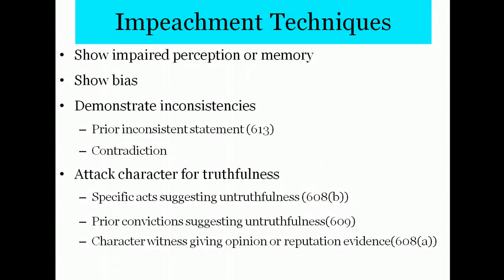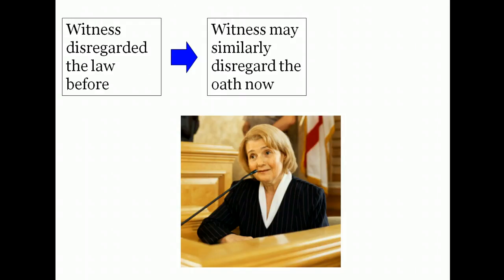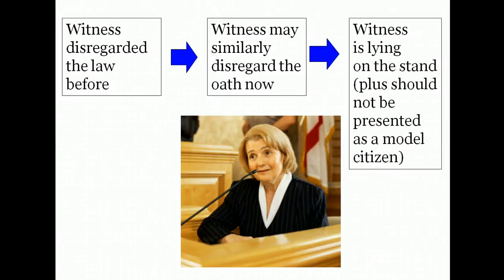Let's first look at where Impeachment with Prior Convictions fits into the overall impeachment scheme. Use of prior convictions is another way of attacking a witness's character for truthfulness — another way of suggesting that the witness might be lying to the jury. The prior conviction shows that the witness has disregarded the law before, which can suggest the witness might similarly disregard the legal rule here — the oath on the witness stand — and therefore may be lying. There's also a sense underlying this rule that a witness should not be allowed to present himself or herself as a model citizen.